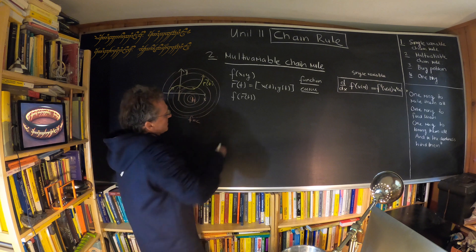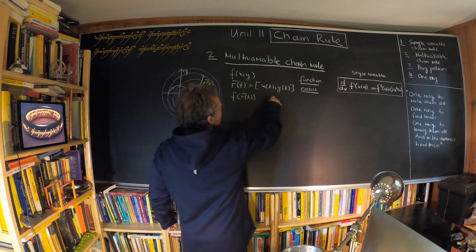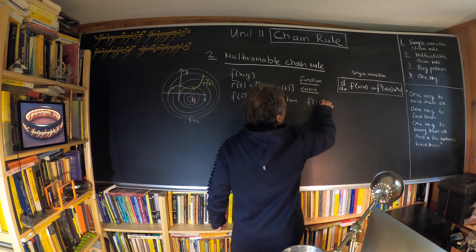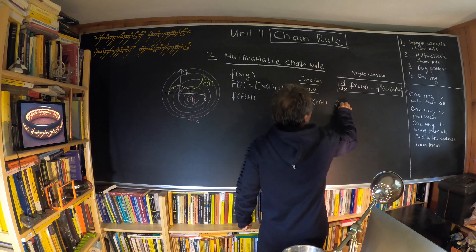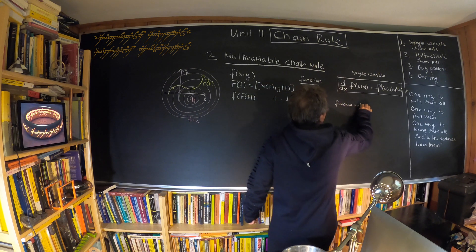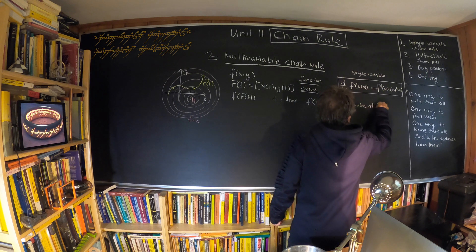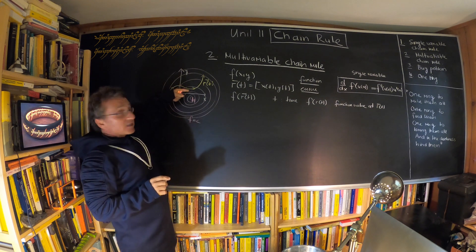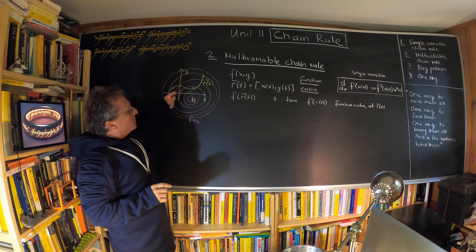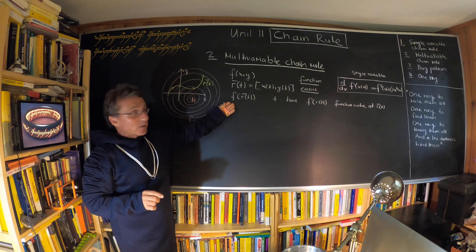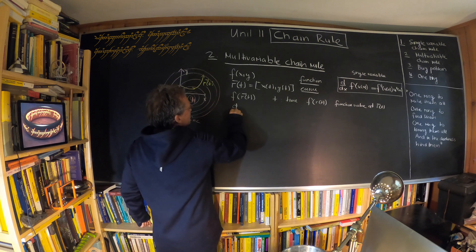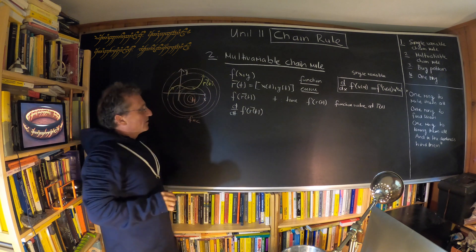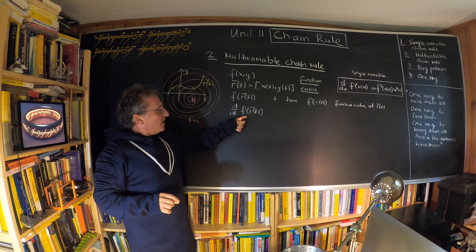So we have t, which we think of as time, and then f(r(t)) is the function value at r(t) — the pressure measured as a function of time. This is a function of one variable. We can differentiate it: what is d/dt of f(r(t))?